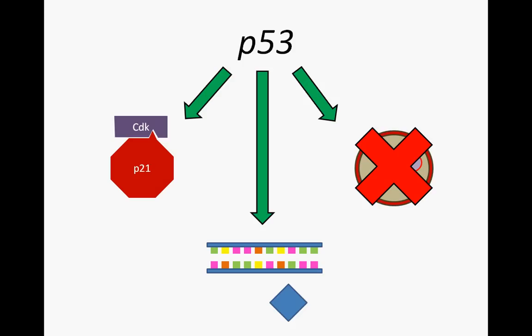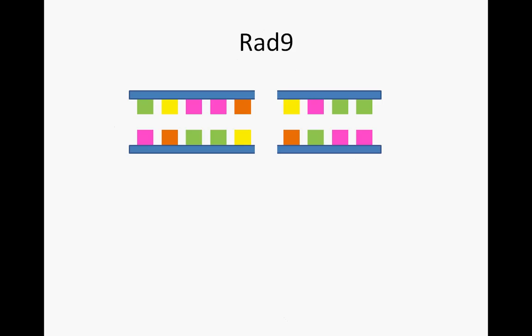While this damage recognition relies on the cooperation of many proteins, one particularly important protein has been discovered through the study of yeast. In yeast, the gene RAD9 produces a protein which is capable of binding to breaks in double-stranded DNA. Upon binding, RAD9 triggers the activation of several proteins with functions similar to P53.